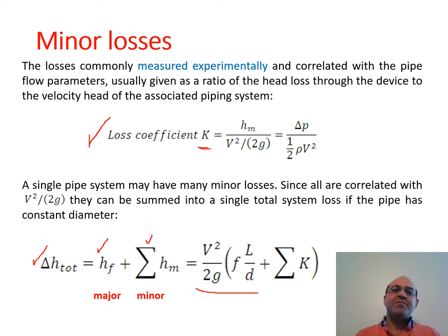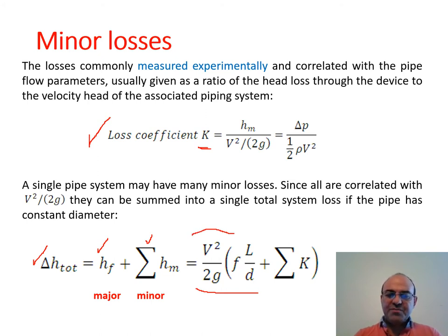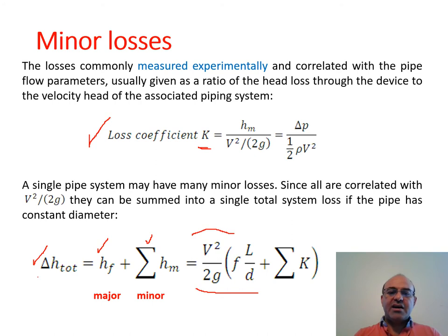The total head loss is h_total = h_major (Darcy-Weisbach) plus the sum of all minor losses. We count how many valves, bends, elbows, entrances, and exits we have to get the sum of all minor losses. Sometimes the sum of minor losses can be quite large, even larger than the major loss. Factoring out v²/2g gives: h_total = [fL/D + ΣK] × v²/2g.